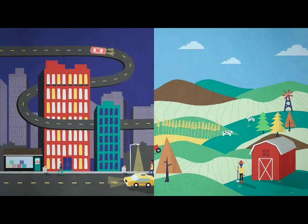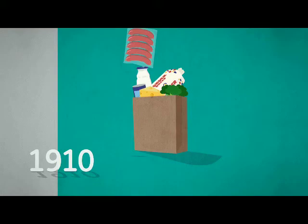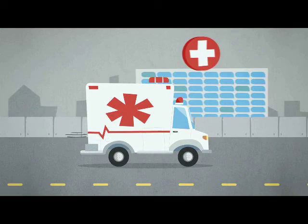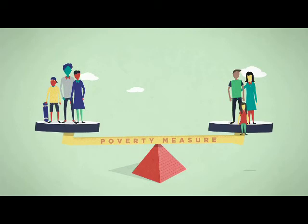Today, food is a lot cheaper, but other necessities cost more, like transportation, healthcare, and childcare. In its simplicity, the poverty measure both overstates and understates the realities of poverty.